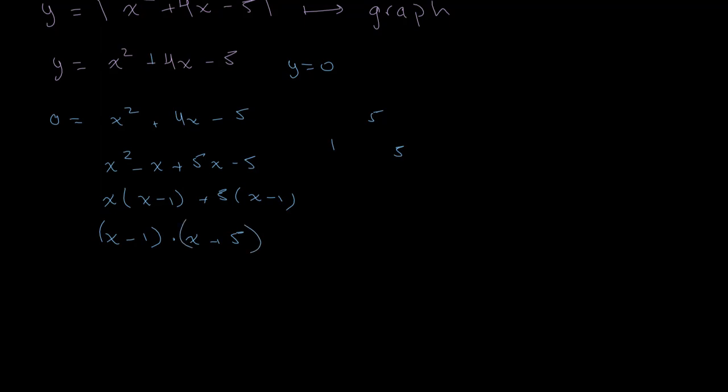And therefore, x equals 1 or x equals negative 5. And in both of these cases, y equals 0. So we have our initial points of intercept. Let's draw them on a graph.